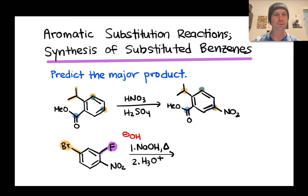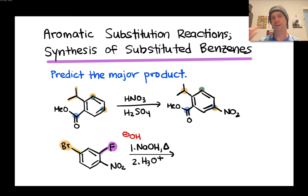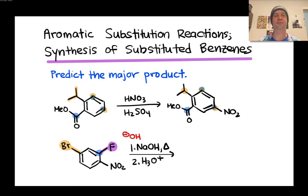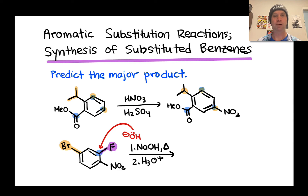In SN2 and SN1 reactions, fluoride is not a good leaving group — alkyl fluorides are terrible substrates. However, the trend flips in nucleophilic aromatic substitution: the carbon bearing the very electronegative fluorine is highly electrophilic, making aryl fluorides fantastic electrophiles in SNAr reactions. So nucleophilic substitution occurs preferentially at the carbon connected to fluorine rather than bromine.